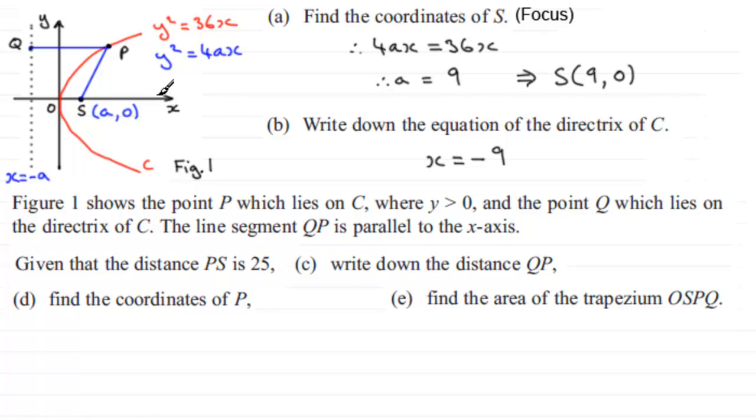Now, again, you should be familiar with the fact that the locus of a point P, that is such that its distance from a fixed point S to a fixed line is always the same, gives a parabola. So if we mark in that those two lengths are meant to be the same, not that it looks like it in my sketch here, but we're told that PS is 25 units. So we should be able to write down the distance of QP. That too is going to be 25 units. So QP = 25.